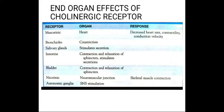These cholinergic receptors are subclassified as either nicotinic or muscarinic. Muscarinic receptor stimulation on the heart causes a decrease in heart rate, contractility, and conduction velocity. On bronchioles the effect is constriction. On the salivary gland it stimulates secretion. In the intestine it causes contraction and relaxation of sphincters and stimulates secretion. On the bladder it causes contraction and relaxation of the sphincter. Nicotinic receptor stimulation at the neuromuscular junction causes skeletal muscle contraction, and at autonomic ganglia it causes sympathetic nervous stimulation.